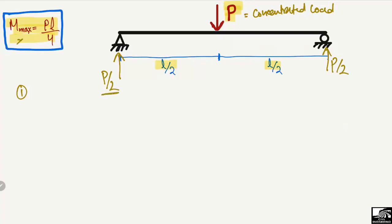Each support takes P/2 because the load is acting at the center of the beam. If the load were acting at any other point, the reactions would be different. But since it is at the center, half of the load is taken by support A and half by support B.